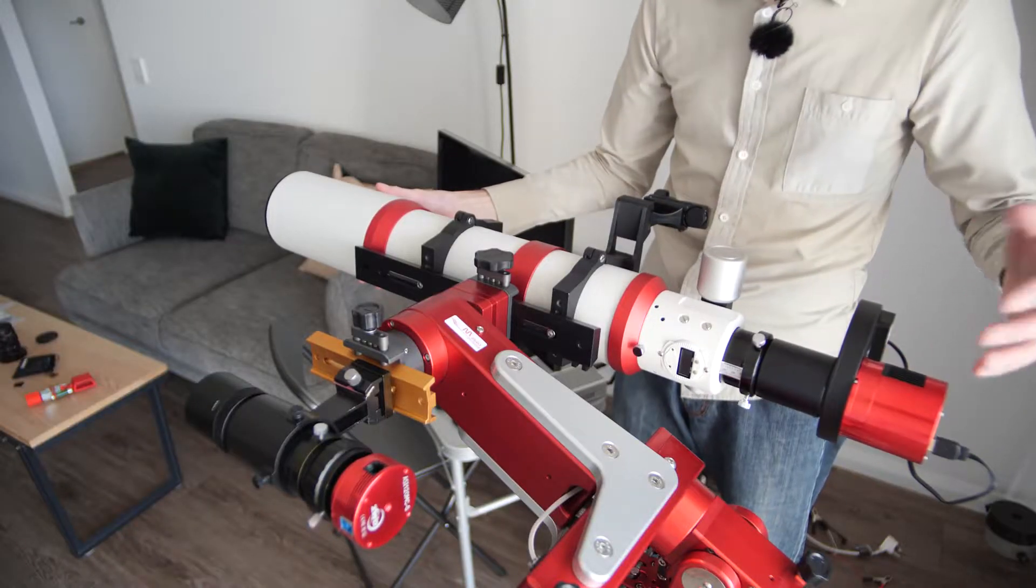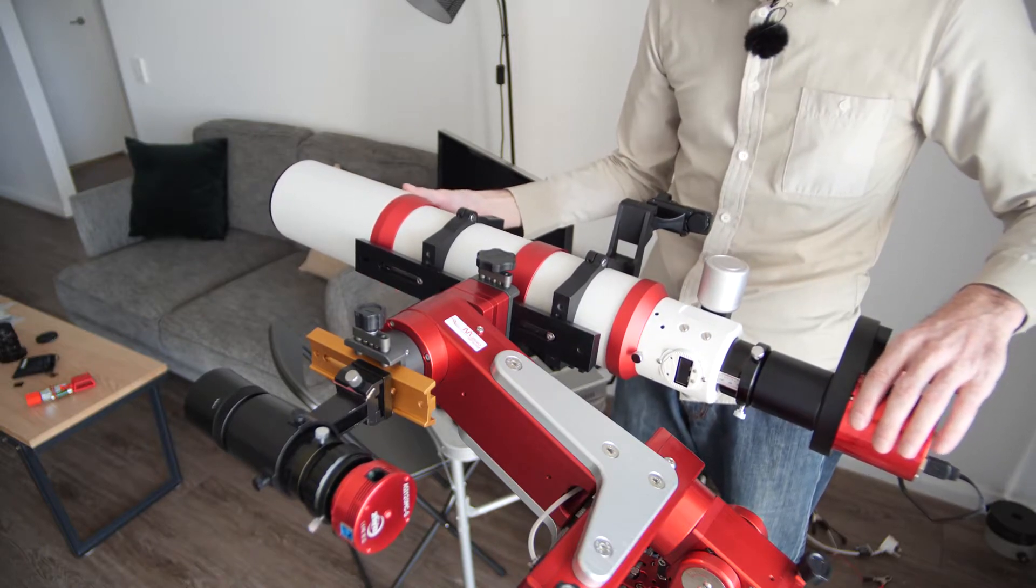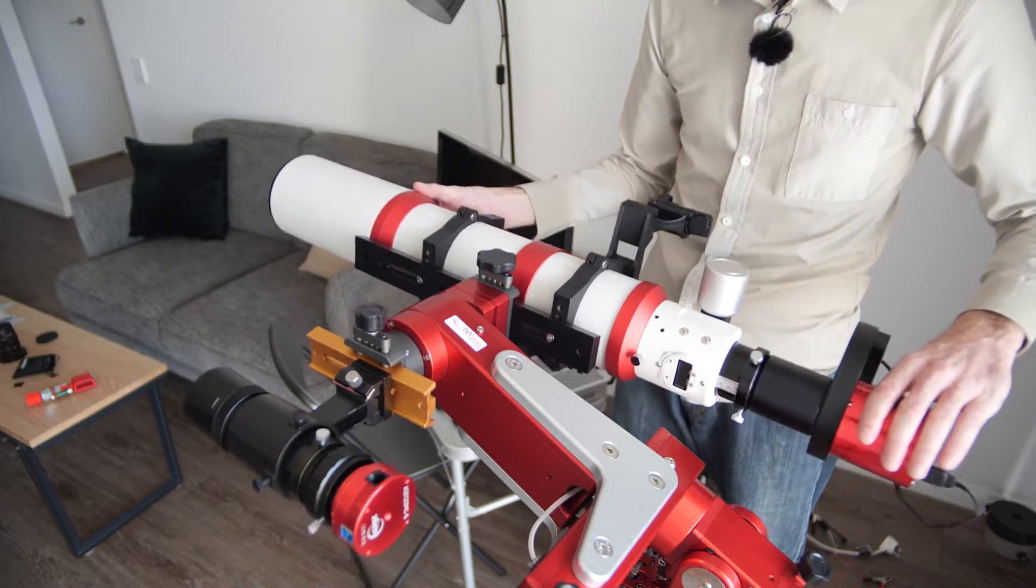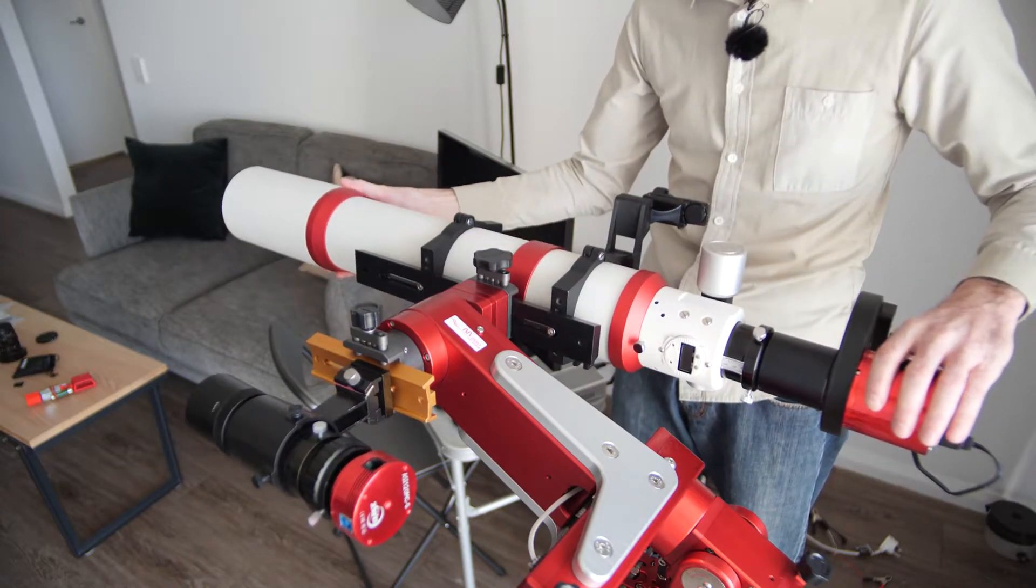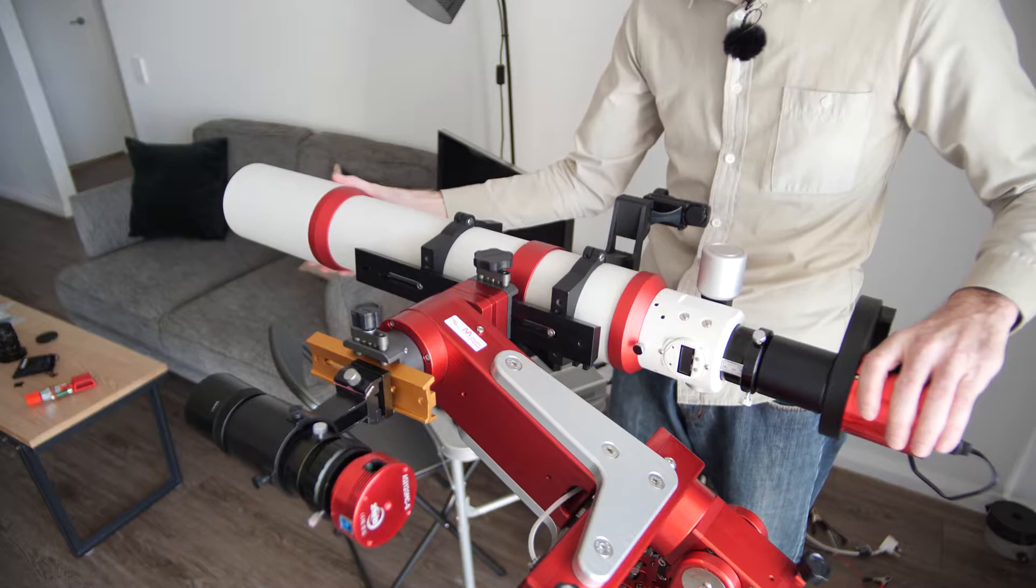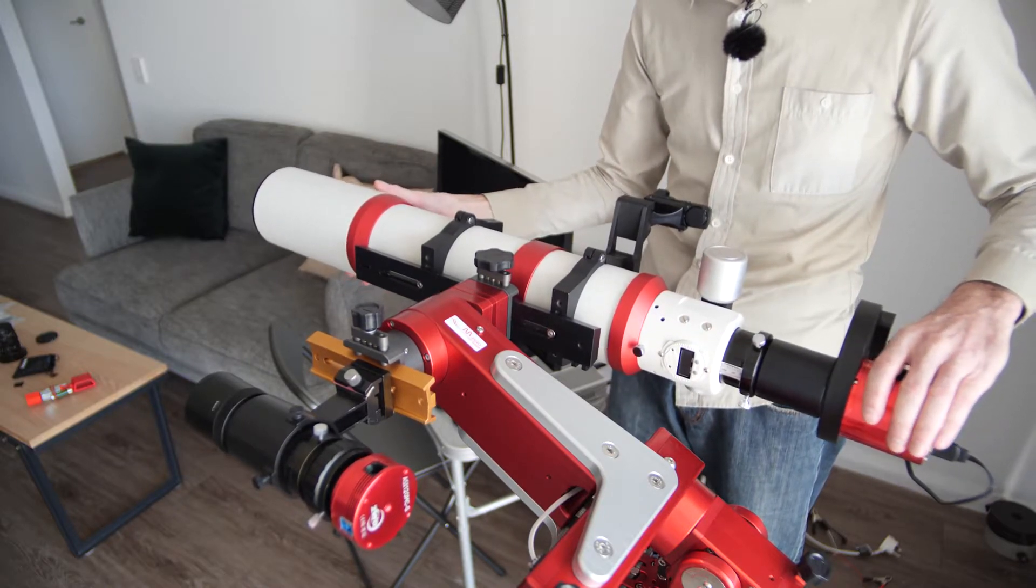The good thing about having a dew shield on the end is that with the dew shield all the way back it's camera heavy, and then you move the dew shield all the way forward and it's nose heavy. So you can use the dew shield as a fine balance instead of moving the whole scope.